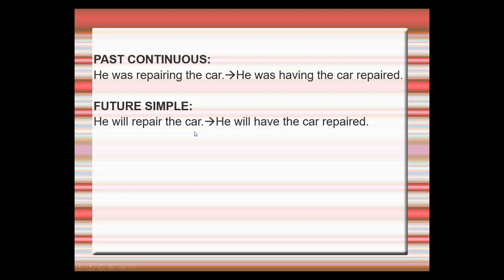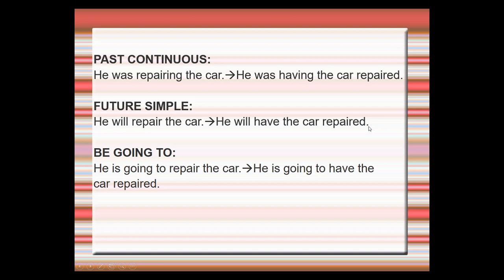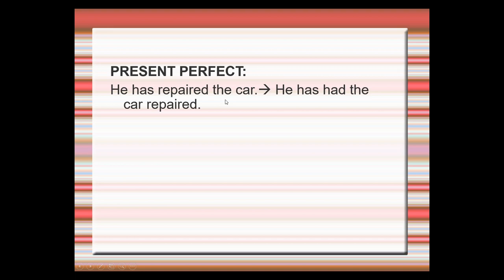Past continuous: he was repairing the car / he was having the car repaired — have is in the past continuous form here. Future simple: he will repair the car / he will have the car repaired. Be going to: he is going to repair the car / he is going to have the car repaired. Present perfect: he has repaired the car / he has had the car repaired.